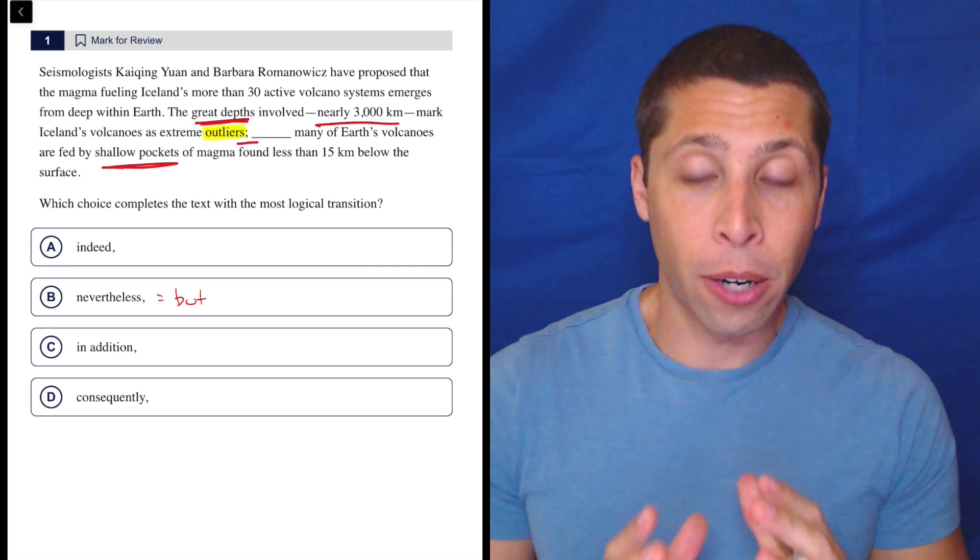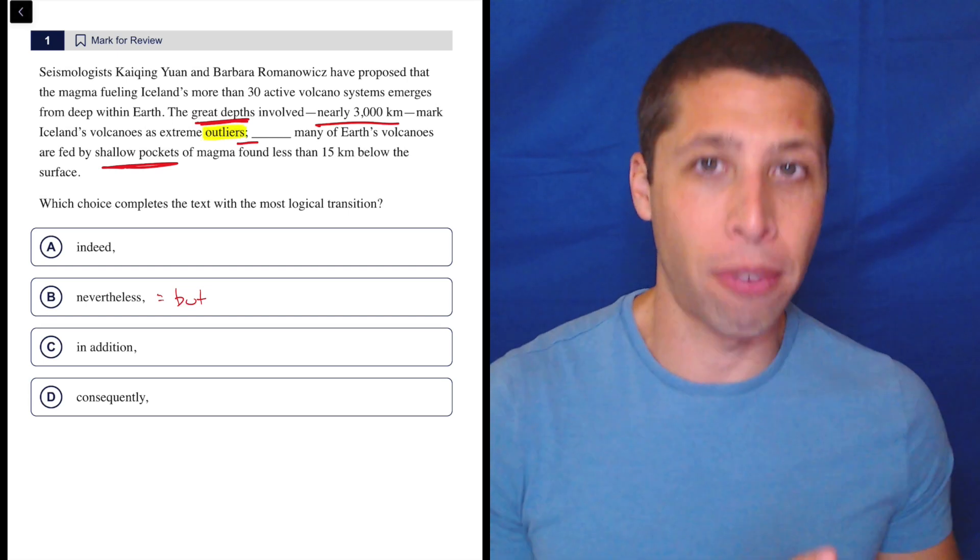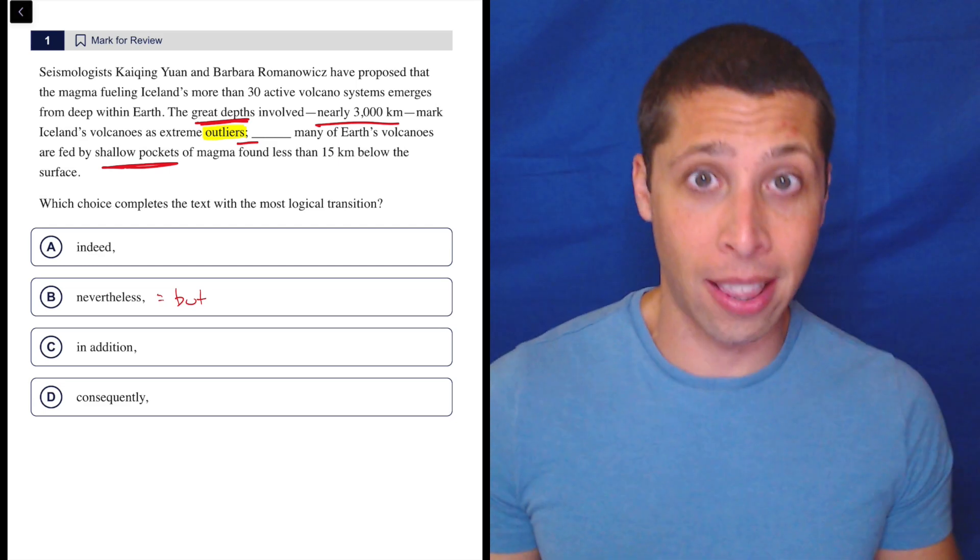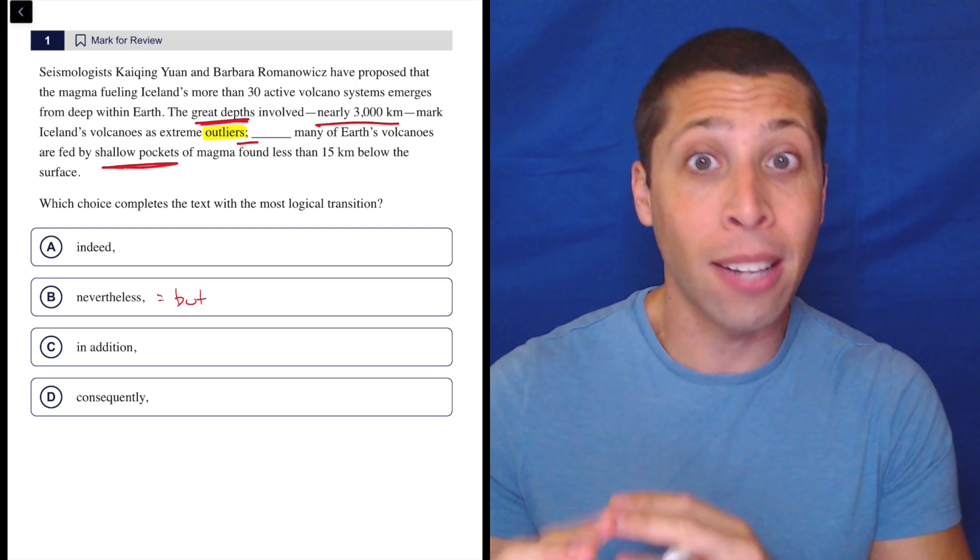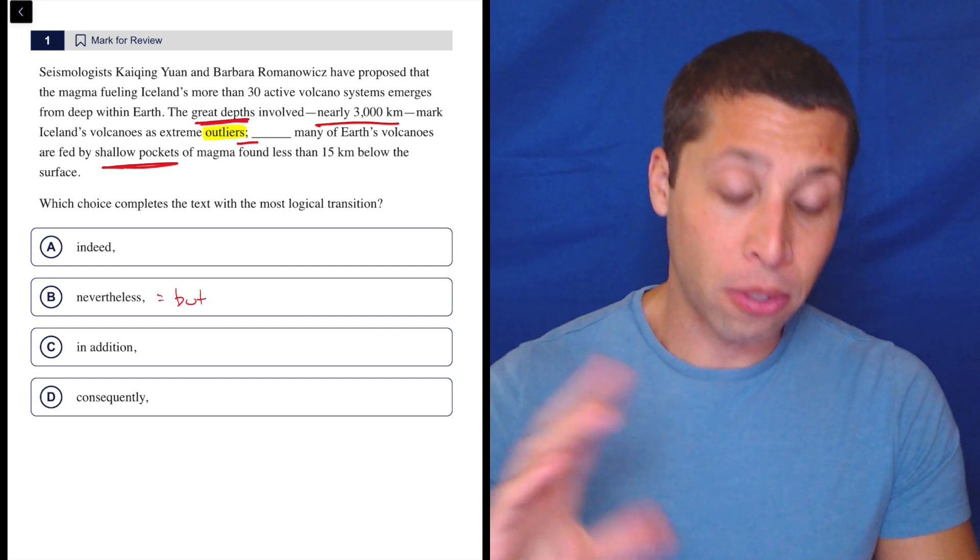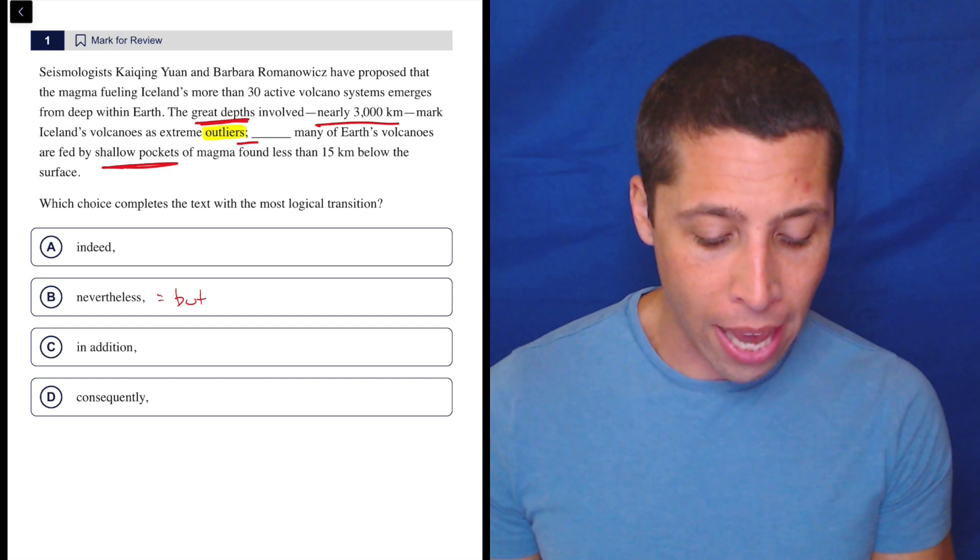But the point is we're trying to emphasize that Iceland is an outlier. So that's the key here. We're not moving away from that point. We're trying to suggest that that's very important, that this Iceland thing, these volcanoes are weird and that's worth talking about, that that's noteworthy. So that then helps. We can kind of start to look through the other choices as well and see what we get.